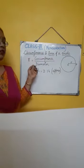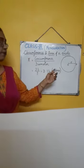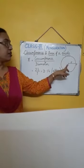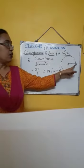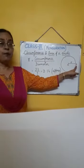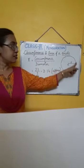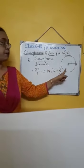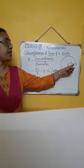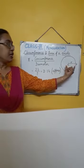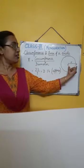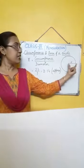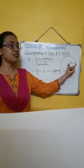Let us today discuss about the circle. You have the idea of a circle. This is a center, and P is any point on the circumference. This outer boundary is called the circumference. This distance from the center to the circumference is called the radius of a circle.